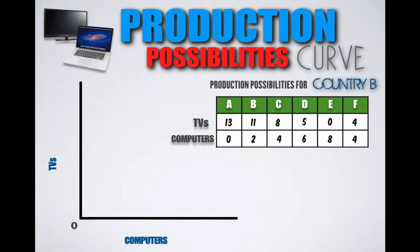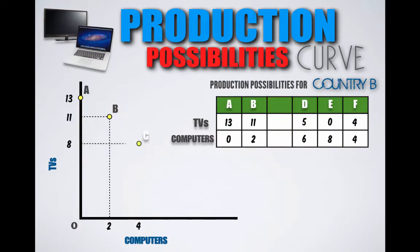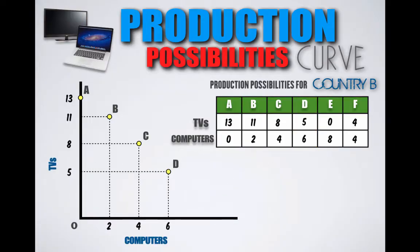We're going to take the production possibility combinations listed in the schedule and plot them on this frontier. At Combination A, Country B can produce 13 TVs and zero computers. At Combination B, Country B can produce 11 TVs and two computers. At Combination C, Country B can produce eight TVs and four computers. At Combination D, Country B can produce five TVs and six computers. At Combination E, Country B produces no TVs and eight computers.